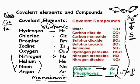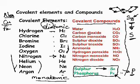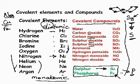For covalent compounds, stop the snapcast and commit these to memory. Water is H₂O; carbon dioxide (di = 2) is CO₂; carbon monoxide (mono = 1) is CO; sulfur dioxide (di = 2) is SO₂; sulfur trioxide (tri = 3) is SO₃.